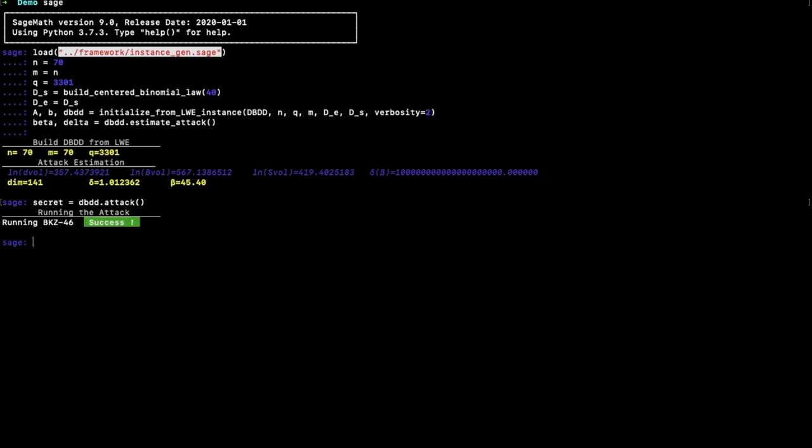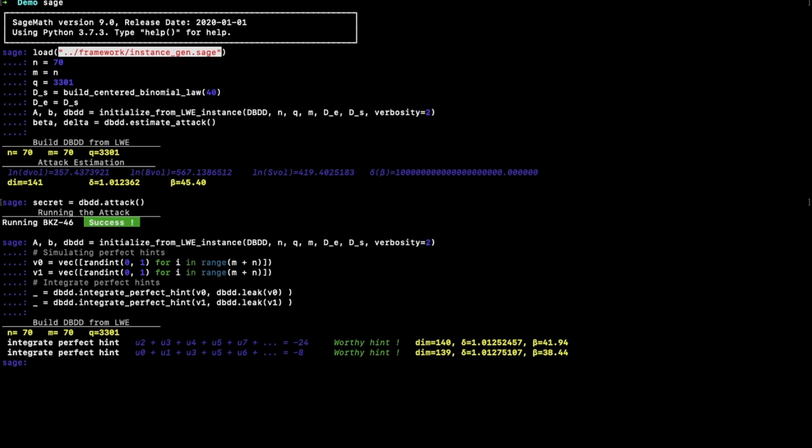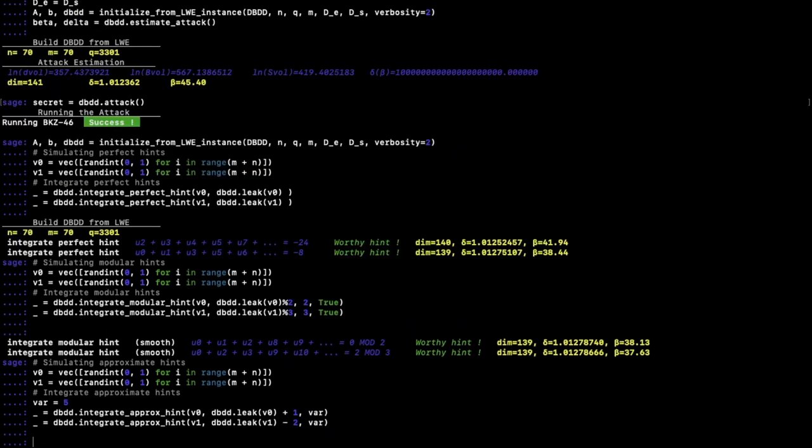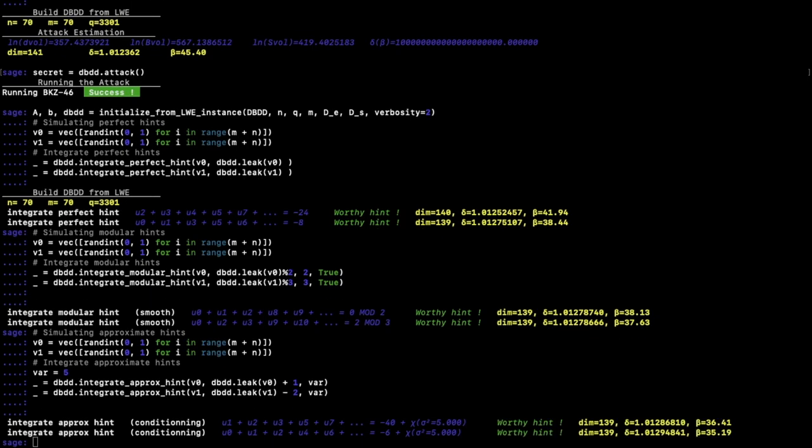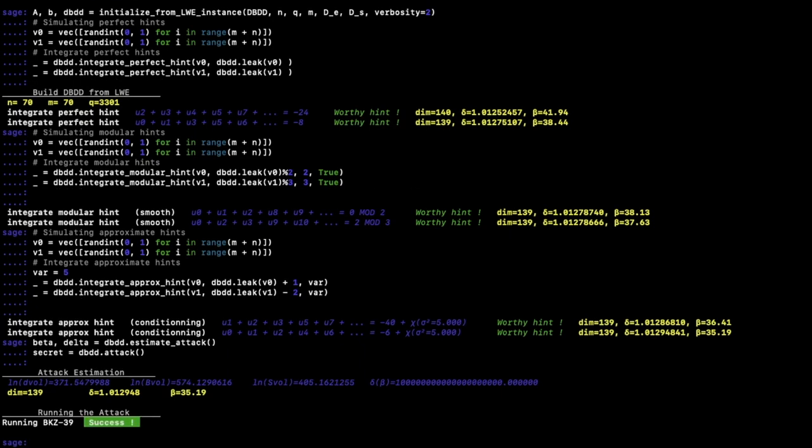A block size of 46 was enough to recover the secret. Let us do the same with two randomly generated perfect hints. Beta is now 38. We now integrate two random modular hints and approximate hints. Now the block size is estimated at 35. We run the attack again and end up with a block size of 39. The hints helped to have a more efficient attack. Our tool is available on GitHub, feel free to use it and improve it.